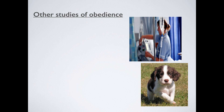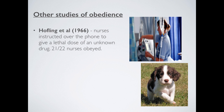Other studies of obedience: first, Hoffling and colleagues, 1966. His biggest issue was that Milgram's experiment was done in a laboratory — how realistic is that? So he concocted a study in a real-life situation. He phoned a nurse on a night shift and said, 'See that drug in the cabinet — it's called Astrofen. I want you to go to Mr. Smith's bed and give him twice the recommended dose. Don't worry, I'm a doctor.' Then he put the phone down. Twice the dose would kill that patient — but incredibly, 21 out of 22 nurses obeyed Hoffling, taking on recommendation that he was a doctor, ready to harm a defenseless patient.